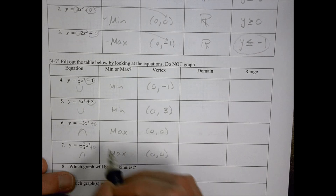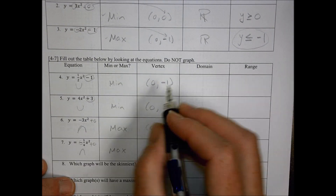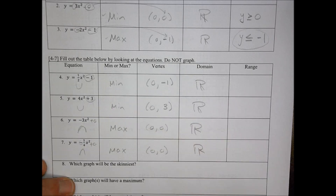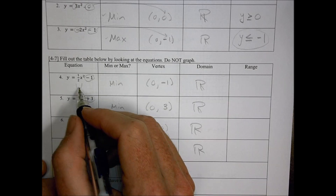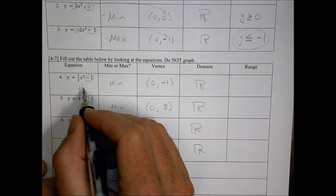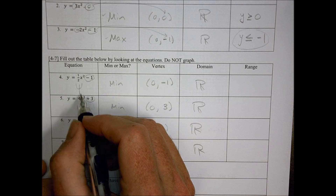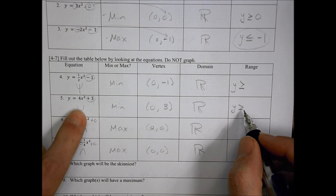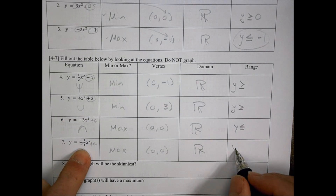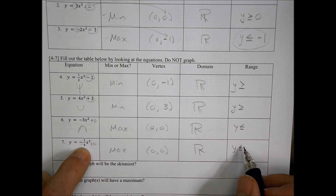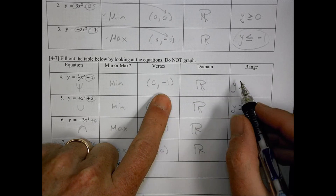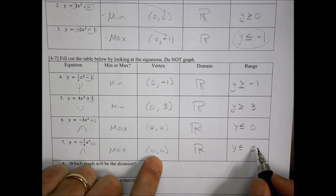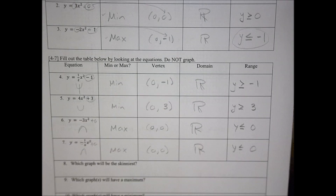In all four of these cases, because we're dealing with basic numbers, the x values are going to be all real numbers — that's our domain. For the range, you're looking at where the graph starts. When it's positive, it's going to be greater than or equal to the vertex y value; when it's negative, y is going to be less than or equal to the vertex y value. So: y greater than or equal to negative one; y greater than or equal to three; y less than or equal to zero; y less than or equal to zero.